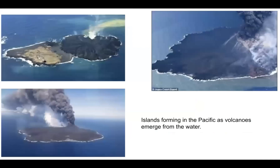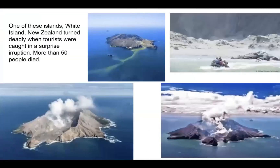Here are some islands that have emerged from under the water — you can see they're still fairly active, and as more ash and lava comes up, the island will grow larger. Recently there was a terrible disaster in New Zealand at White Island, a tourist attraction. There were warning signs that something bad was about to happen, but they kept going. More than 50 people died, caught by surprise. So be careful around active volcanoes.